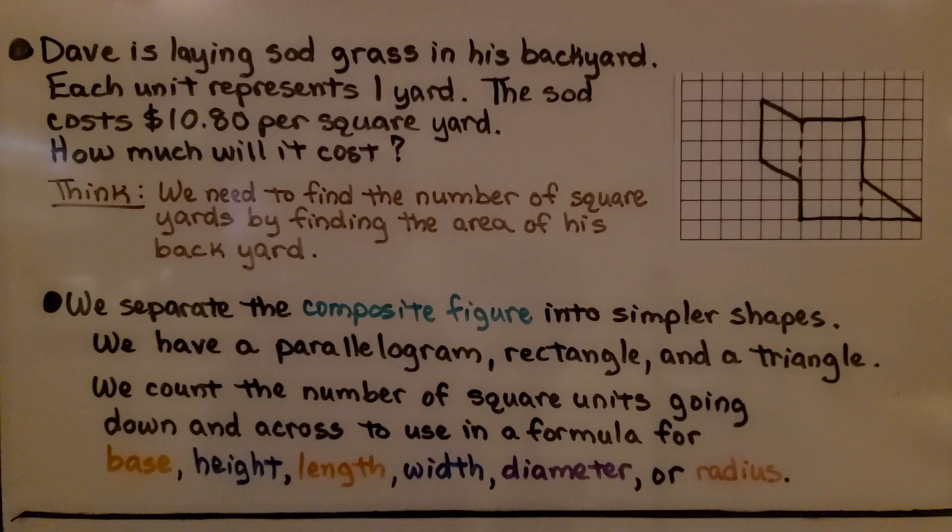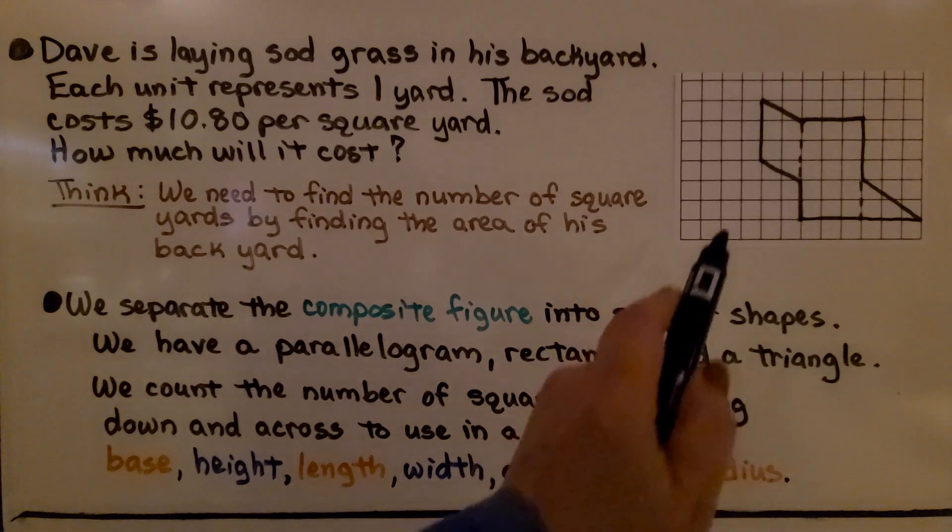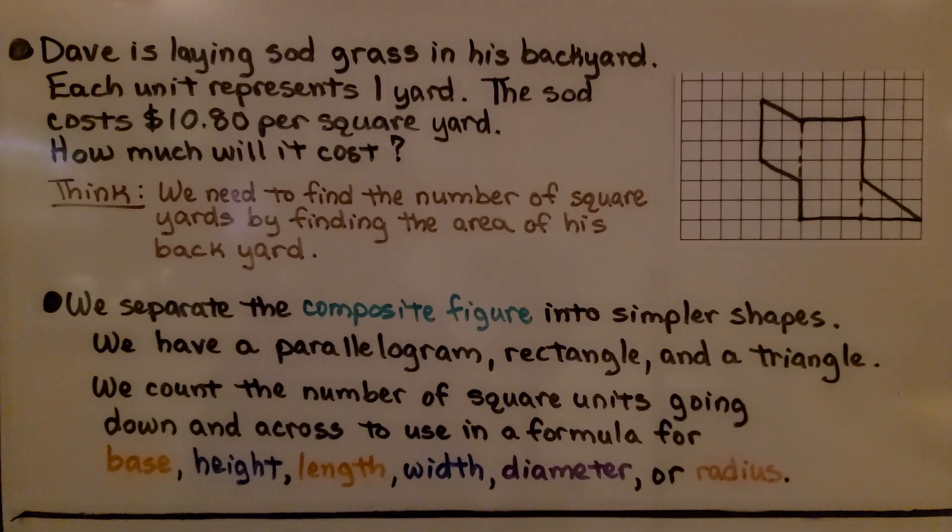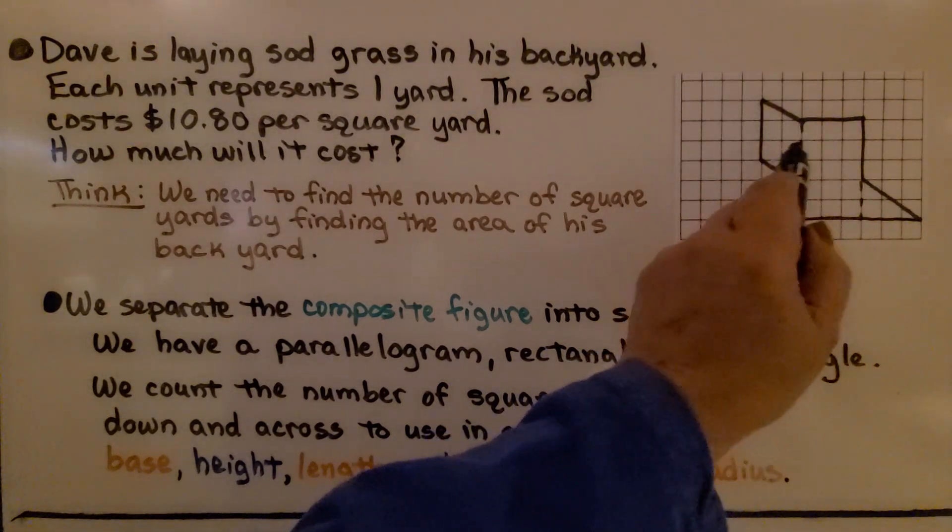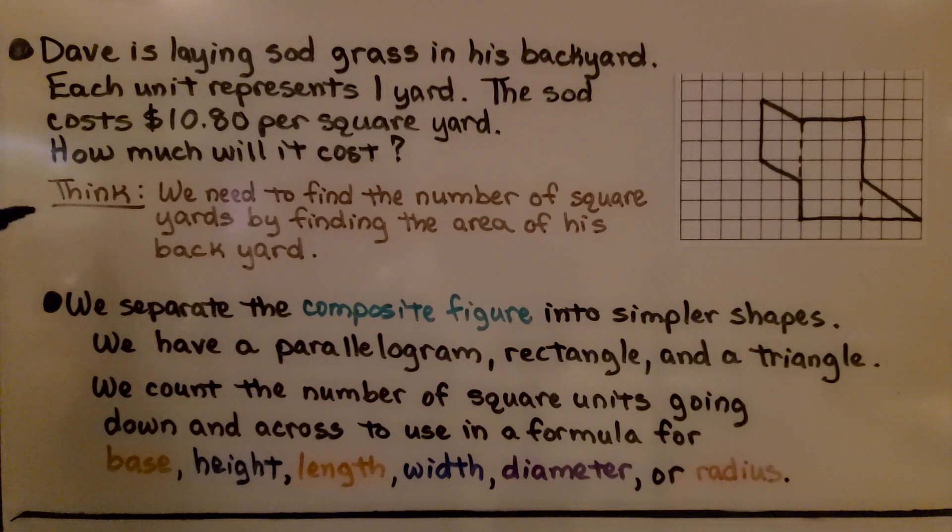So here's our first problem. Dave is laying sod grass in his backyard. Each unit, so that means each square, represents one yard. The sod costs $10.80 per square yard. How much will it cost? So we have the shape of his area that he's going to lay the sod. And we think, we need to find the number of square yards by finding the area of his backyard.